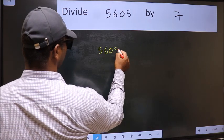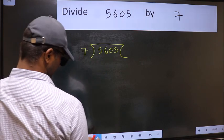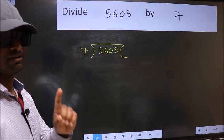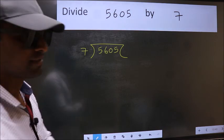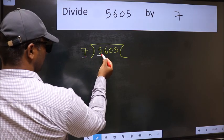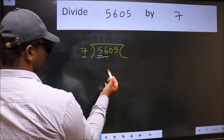5605 and 7 here. This is your step 1. Next, here we have 5 and here 7. 5 is smaller than 7, so we should take two numbers, 56.